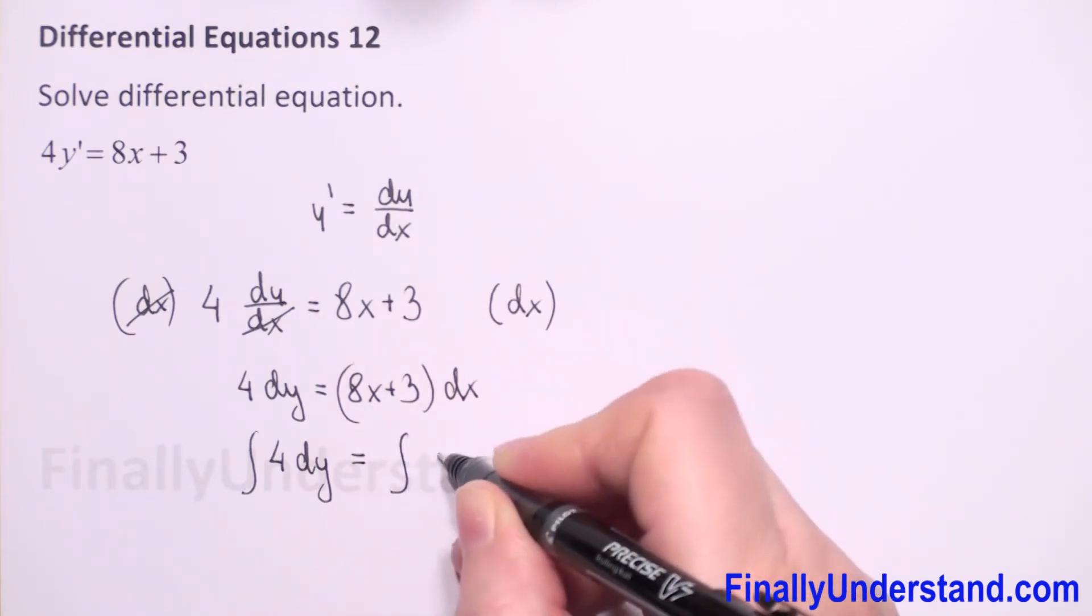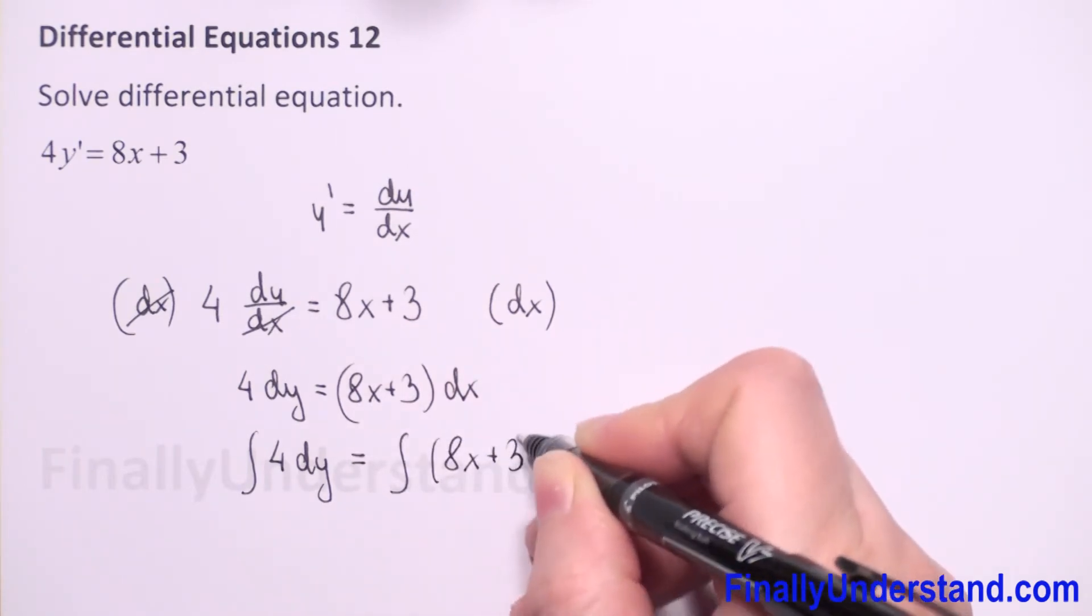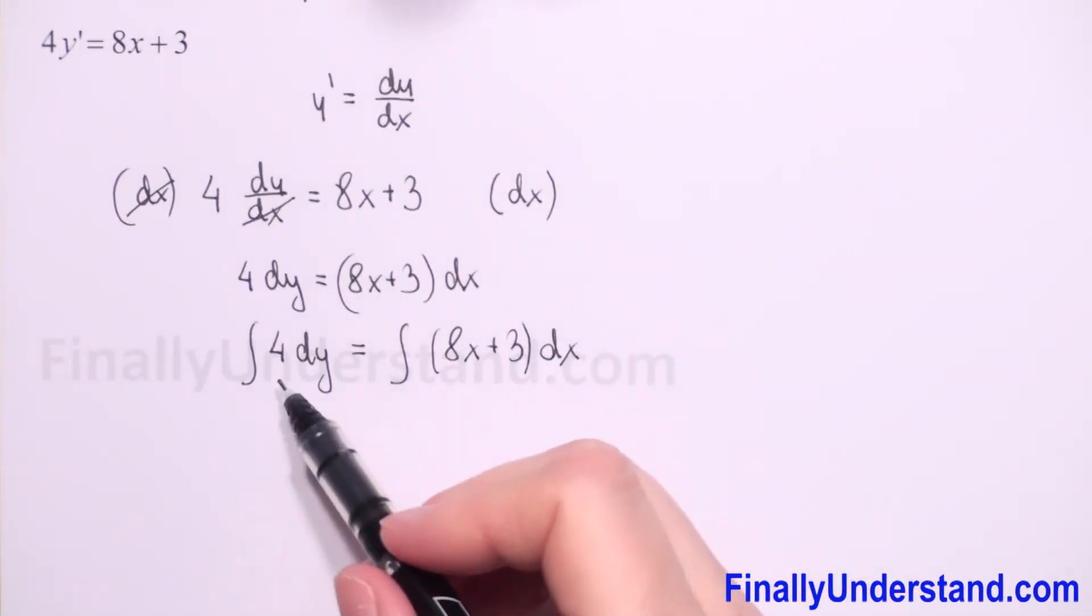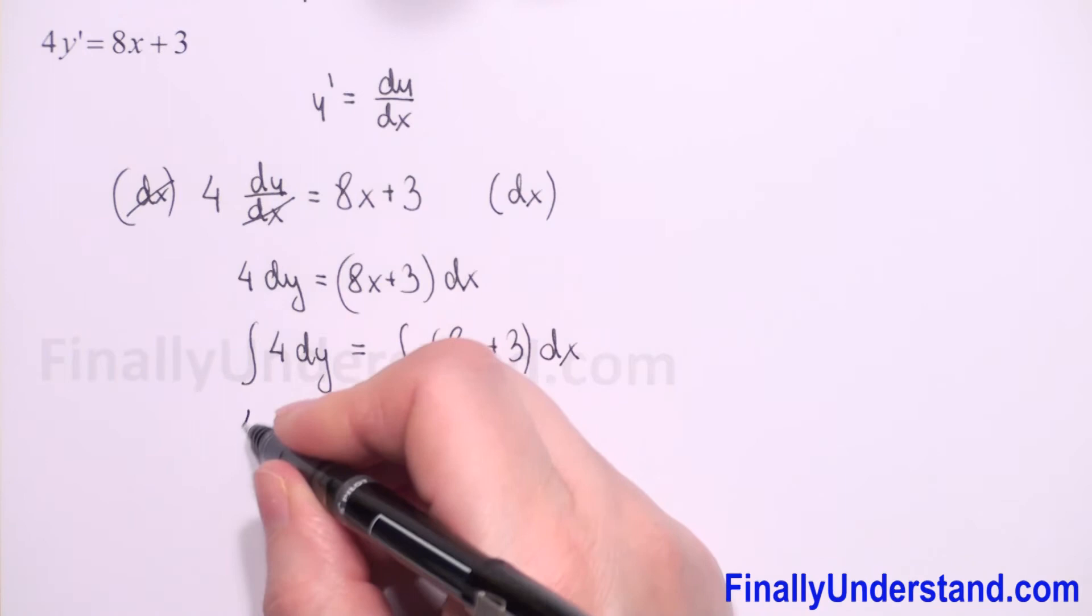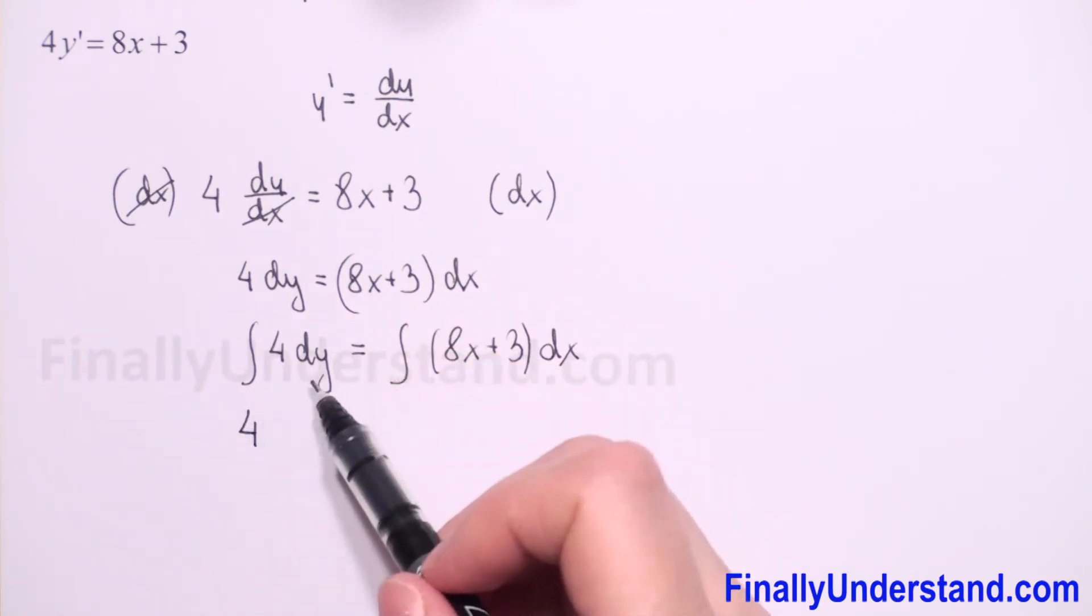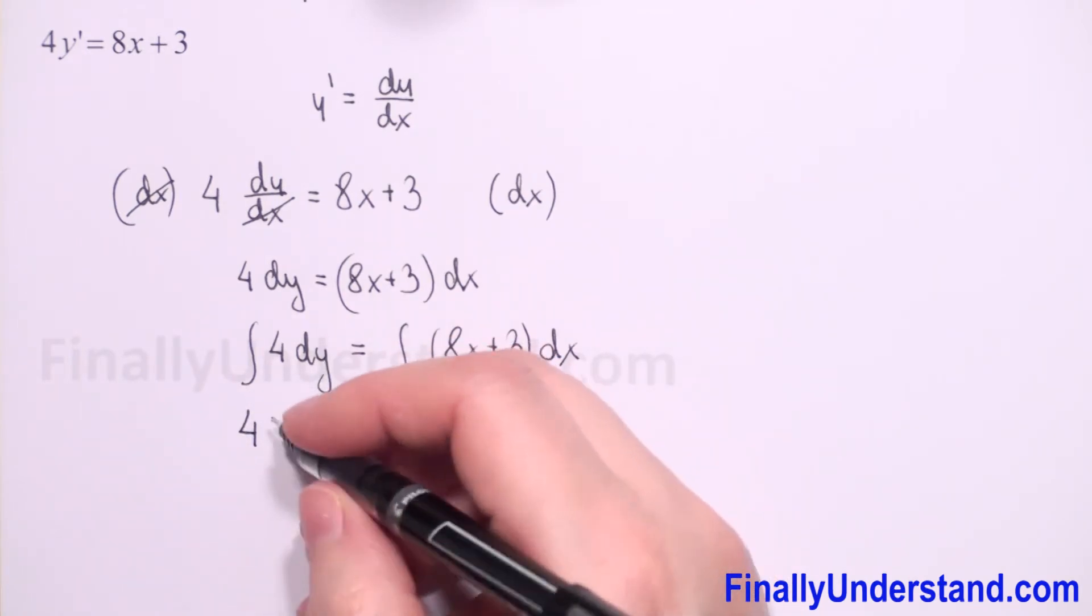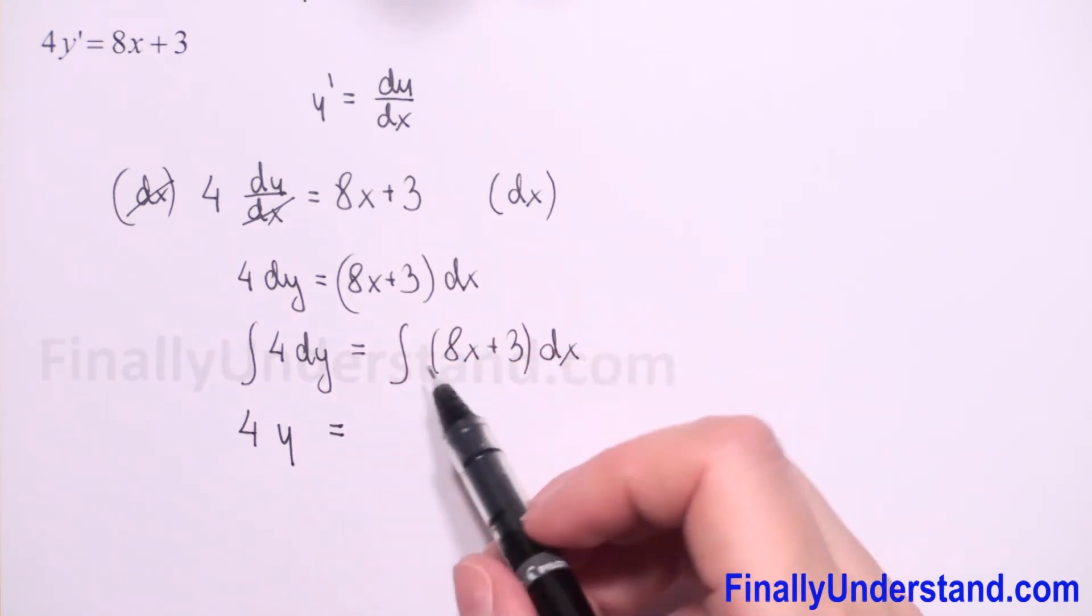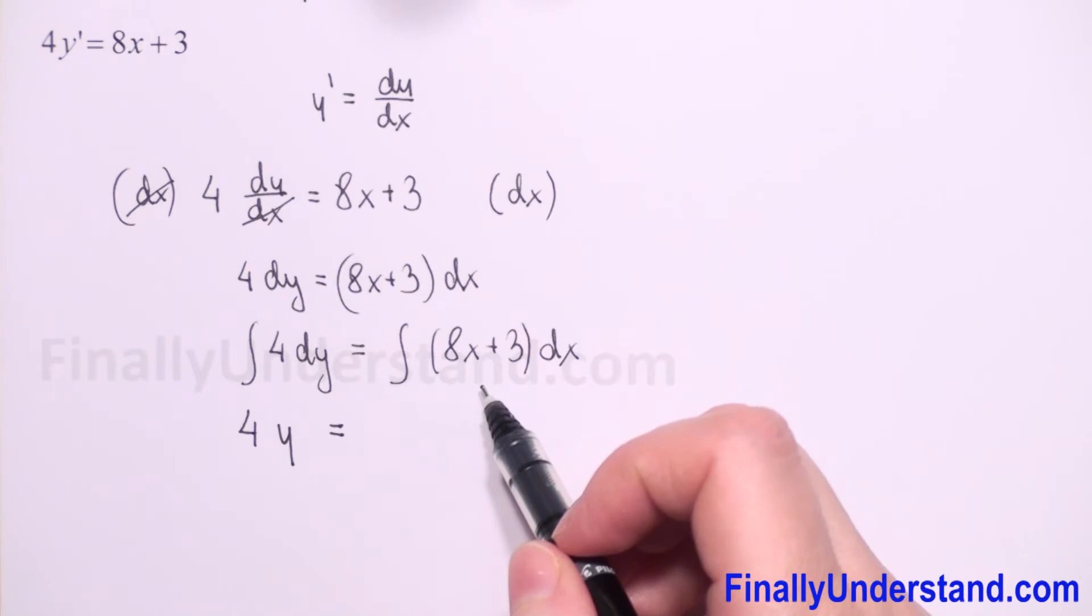Now when we separated variables we can integrate. So we have integral of 4 dy is equal to integral of 8x plus 3 dx. The constant we can put before the integral, so we have 4 times integral of dy. The integral of dy is y.